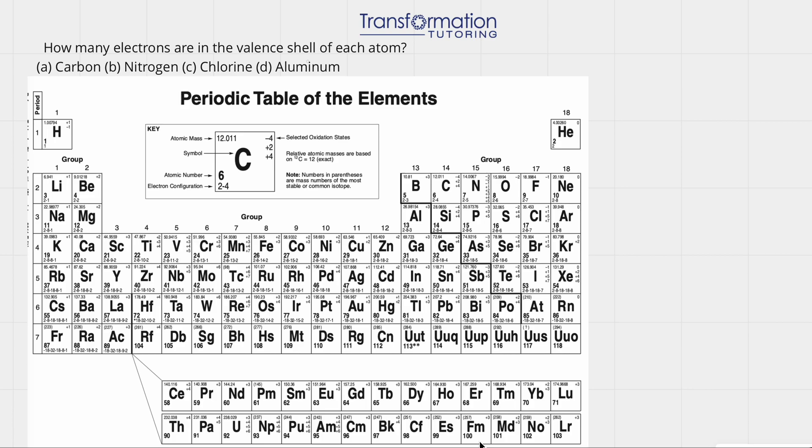How many electrons are in the valence shell of each atom: carbon, nitrogen, chlorine, and aluminum?